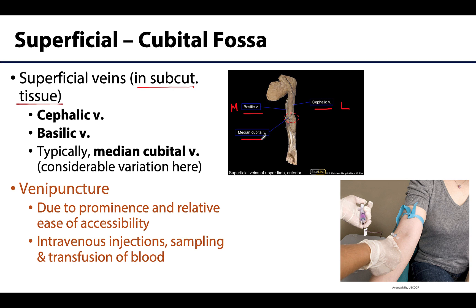You can see the median cubital vein running transversely across the cubital fossa region, connecting the basilic and the cephalic. Due to its prominence and relative ease of accessibility, the cubital fossa is a common site of venipuncture for blood sampling, transfusion, or intravenous injections.